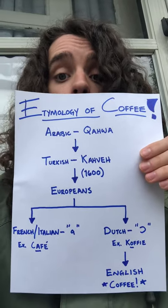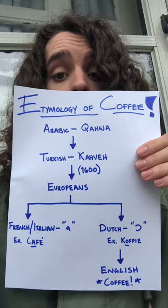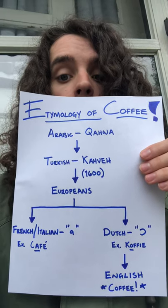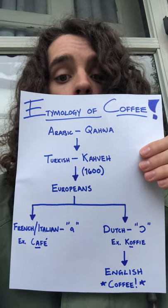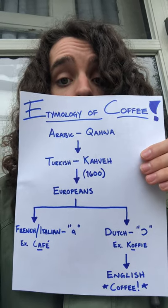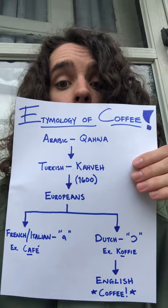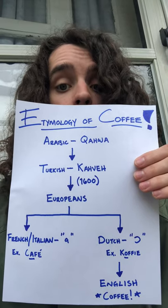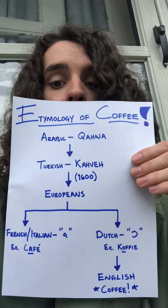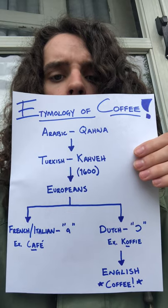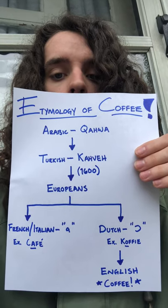So the Dutch is actually where the English got their pronunciation from — of course, 'coffee.' It is much closer to the Dutch pronunciation, with that more O-like sound as opposed to the more AH-like sound. And yeah, I think that is actually it for the video. So that is the etymology of coffee.